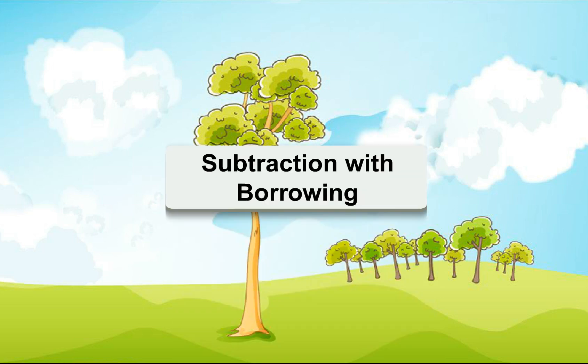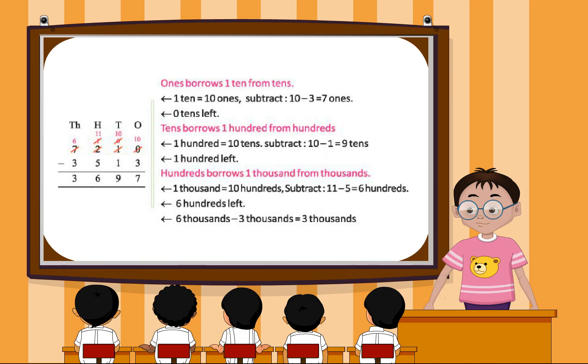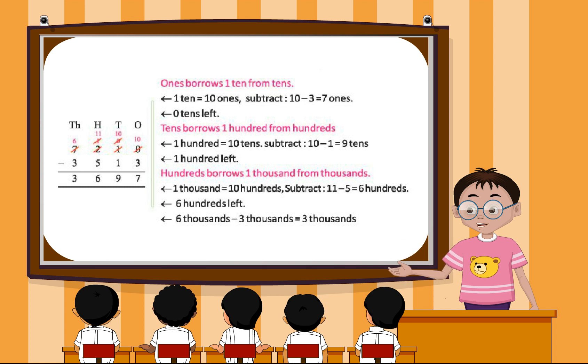Subtraction with Borrowing: Ones borrows one ten from tens. One ten equals ten ones. Subtract. Ten minus three equals seven ones. Zero tens left.